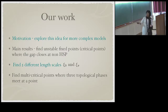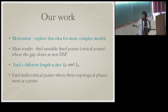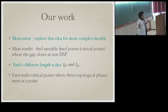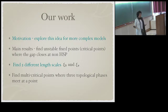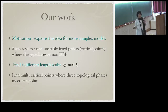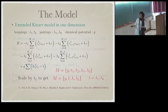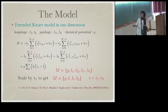Our work explores this idea for more complex models. Our main results are that we do find unstable fixed points and critical points where the gap closes at non-high-symmetry points — something not seen in their models — and we also find multi-critical points where three topological phases meet. We also find two different length scales, which I'll briefly describe, though we haven't completely understood all of what we're getting.